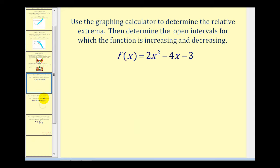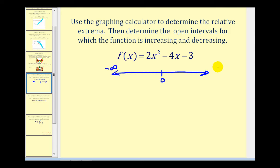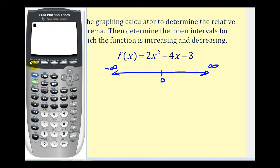Let's take a look at an example. Here we want to use the graphing calculator to determine the relative extrema and then determine the open intervals for which the function is increasing and decreasing. The first thing we should recognize is that we have a polynomial function, or more specifically a quadratic function, and therefore the domain is all real numbers — from negative infinity to positive infinity. Let's go ahead and graph this on our graphing calculator. We're going to press y equals and type in our function, then press zoom six for the standard window.